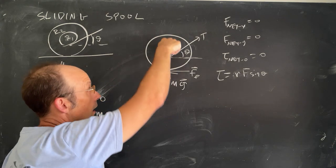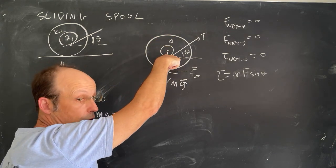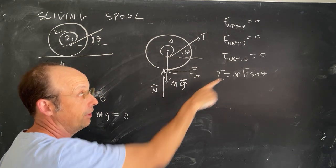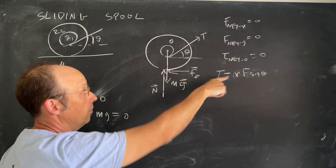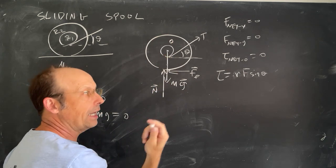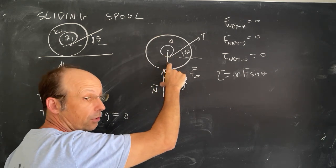N has an R value of R2. But the angle between N and R is 180 degrees and the sine of 180 is zero. The same thing for weight. Weight has an R of zero, so it has no torque. So these two forces exert no torque.